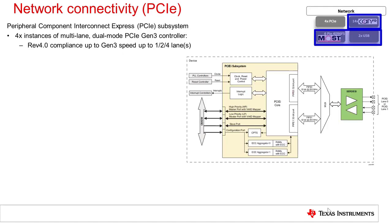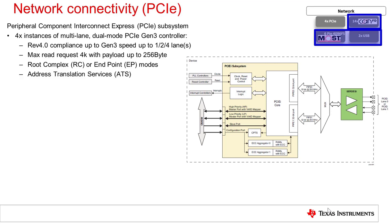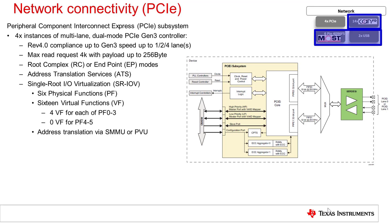Jacinto 7 implements up to four PCIe controllers providing PCIe revision compliance at up to Gen 3 link rates. Each controller allows configurable width of one, two, or four lanes depending on the SoC derivative, and can function as either root complex or endpoint. Working in concert with the SMMU or IOMMU, the controller provides PCIe compliant single route IO virtualization, or SRIOV. This is valuable for multiple hosts to share a common resource, such as a solid state storage device connected over PCIe.